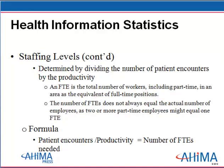The staffing level is determined by dividing the number of patient encounters by the expected productivity. An FTE is the total number of workers, including part-time, in an area as the equivalent of full-time positions. The number of FTEs does not always equal the actual number of employees, because two or more part-time employees might equal one full-time employee. The formula is: patient encounters divided by productivity equals the number of FTEs needed.